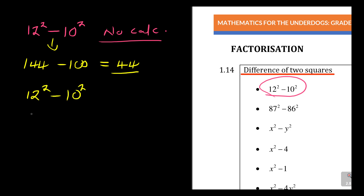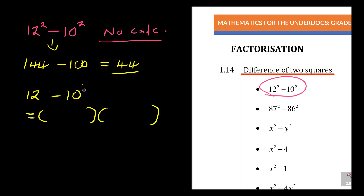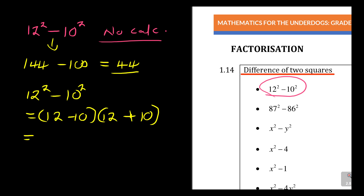Using difference of two squares on 12 squared minus 10 squared, you open two brackets. What you see is 12 minus 10 — write that in the first bracket. In the second bracket, write 12 plus 10 instead of minus. So what is 12 minus 10? It's 2. What is 12 plus 10? It's 22. Then 2 times 22 is 44.